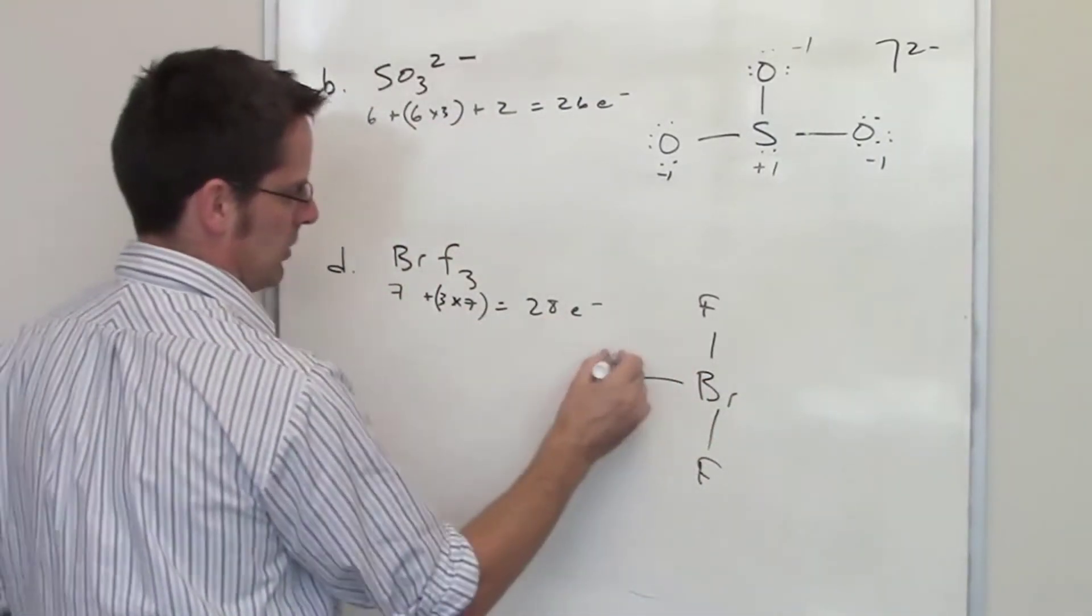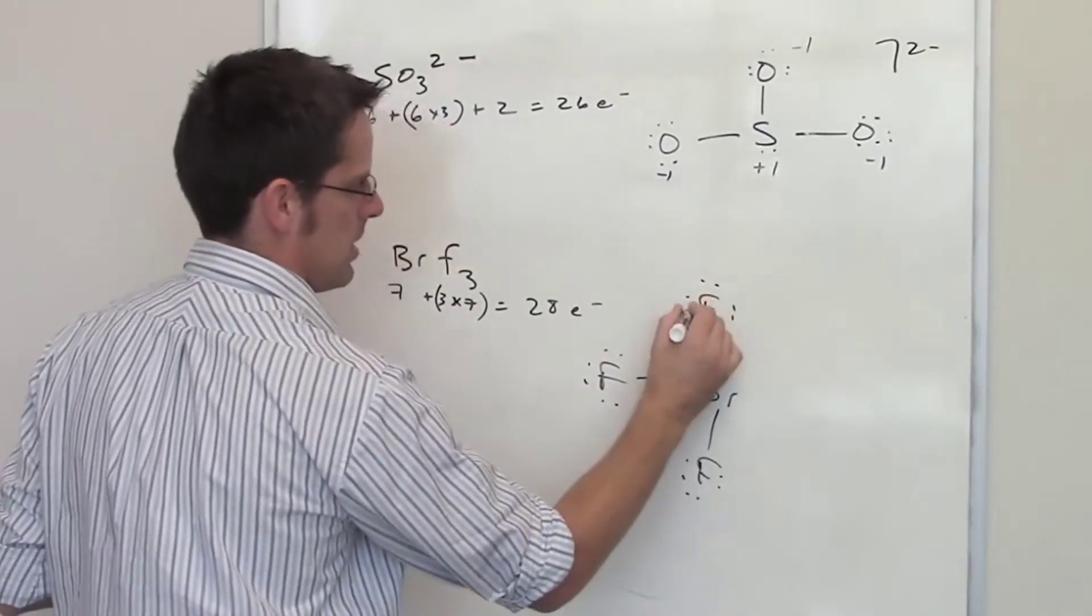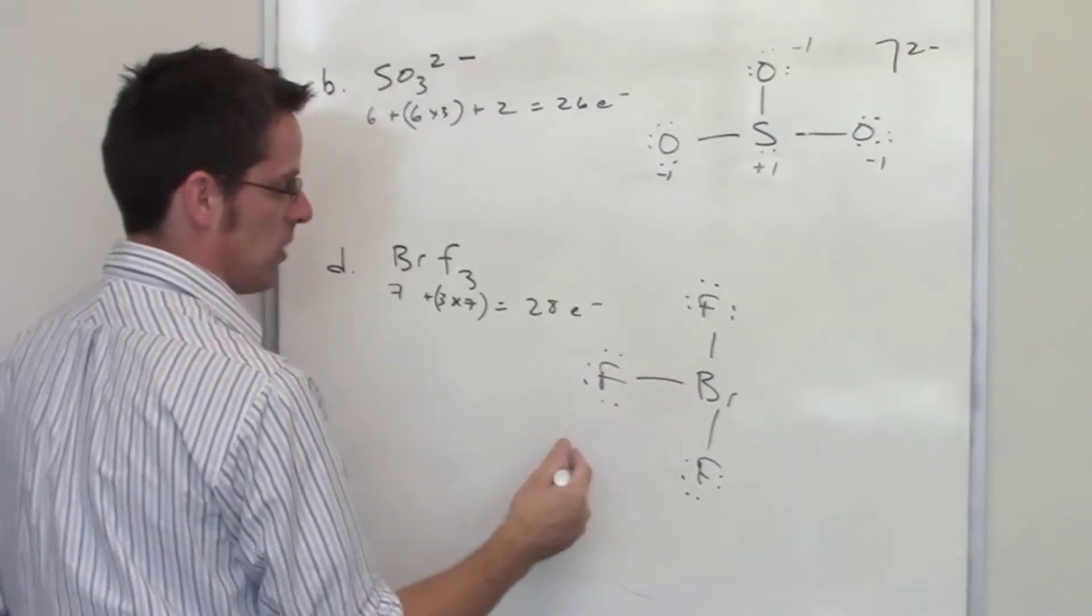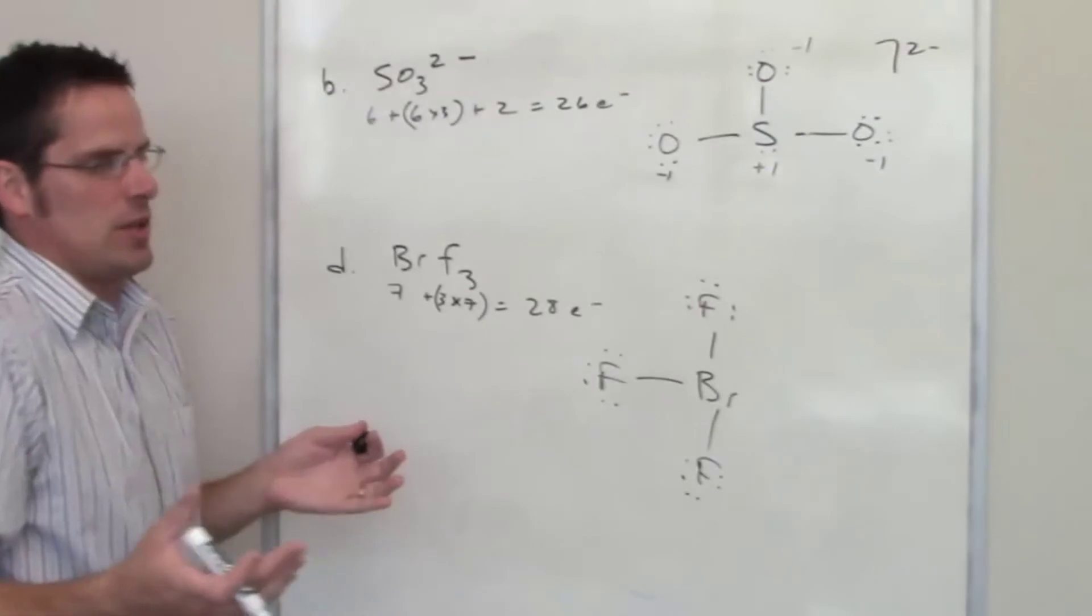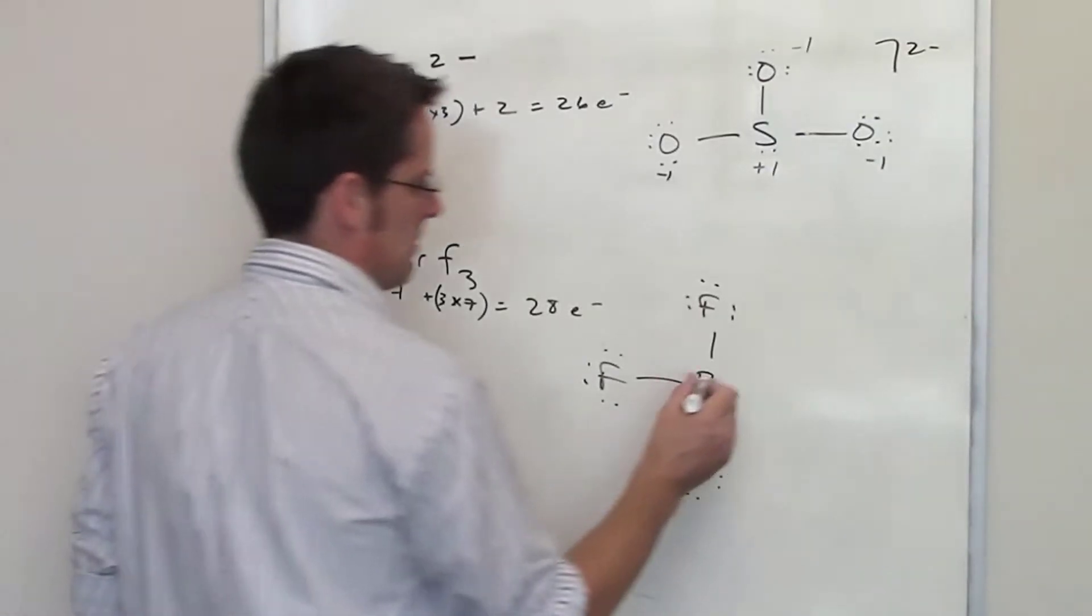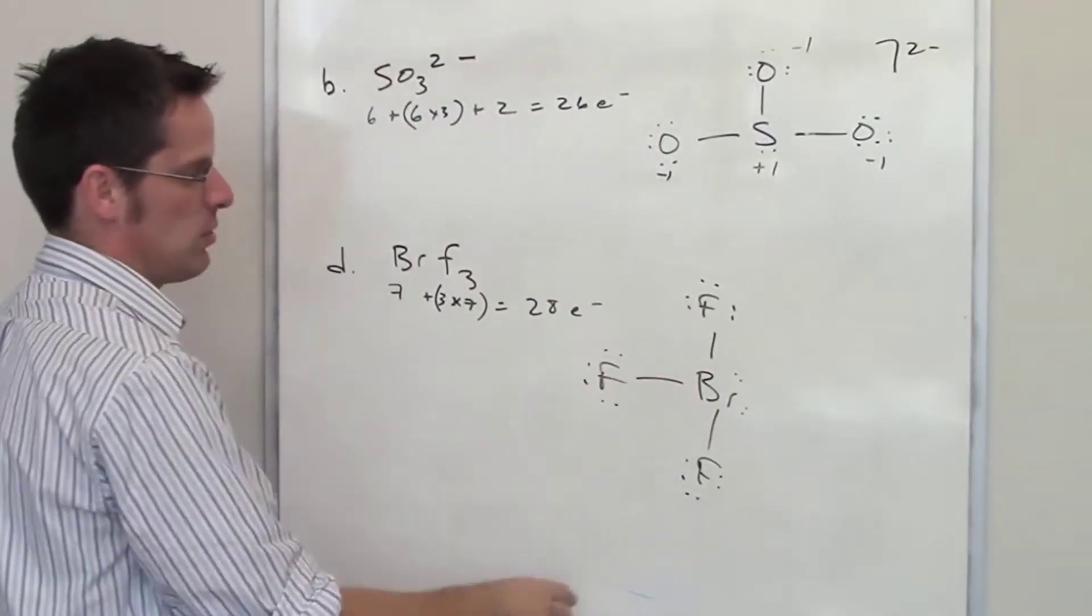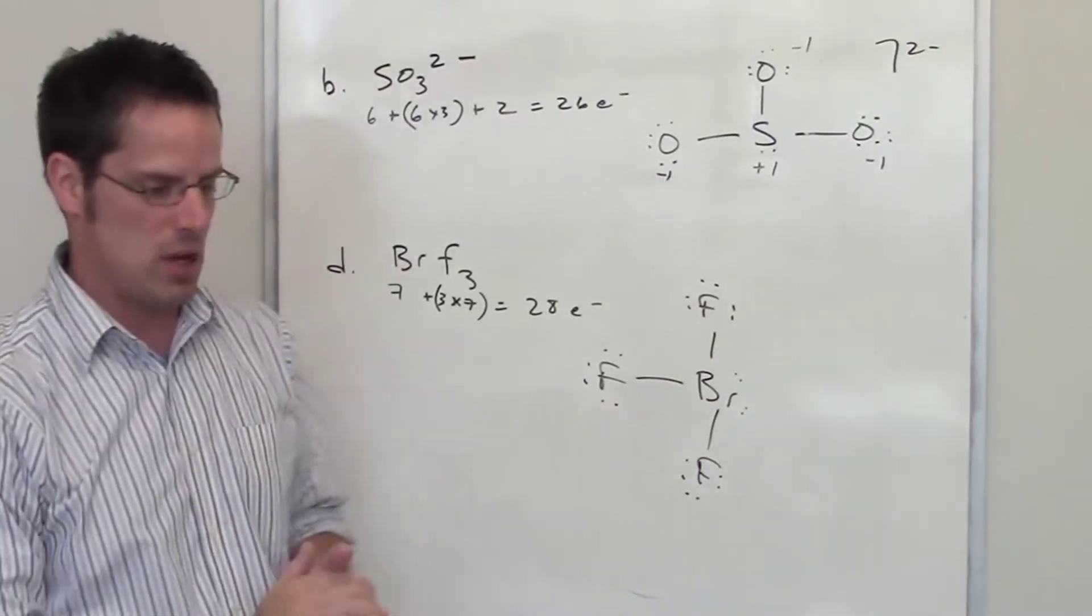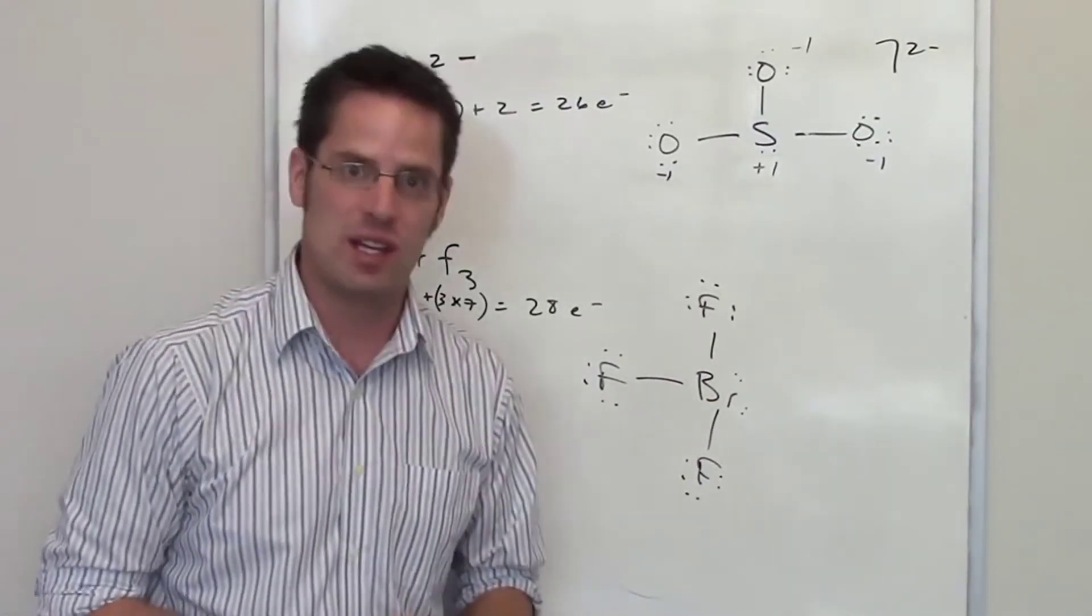Now I'm going to lay down a bunch of electrons here to try and satisfy everybody's octet. I've got eight electrons times three is 24 electrons. I've got four more electrons that I have to put somewhere. Where do those extra electrons go? They have to go on the bromine. So I'm going to put two electrons here and two electrons here. That is a central atom that has five things around it. It has three fluorines and two sets of lone pairs. What is the geometry of that going to be?